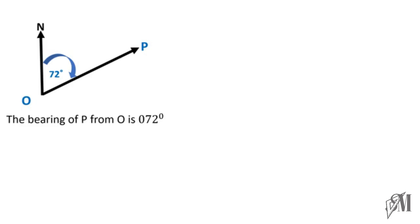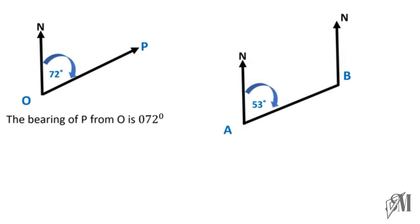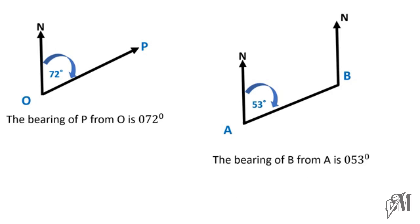In the next example, 53 degrees is marked. The bearing of B from A is 053 degrees — we write a zero in front of 53 because it is a bearing and must have three digits.